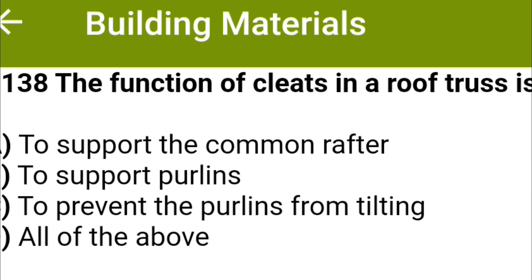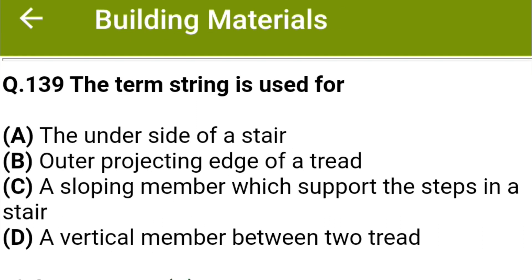The function of cleats in a roof truss is: option A to support the common rafter, option B to support purlins, option C to prevent the purlins from tilting, option D all of the above. The correct answer is option C, to prevent the purlins from tilting.